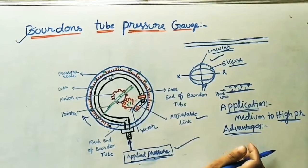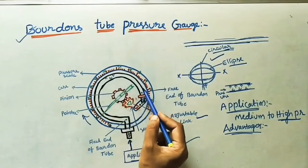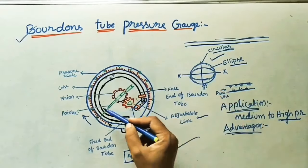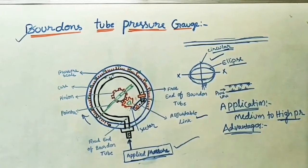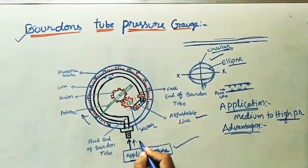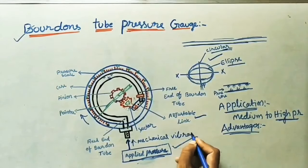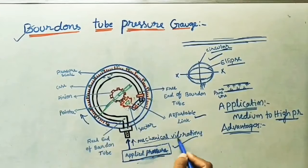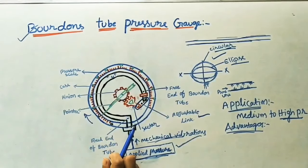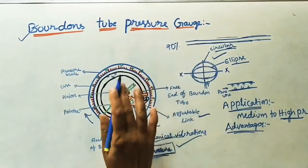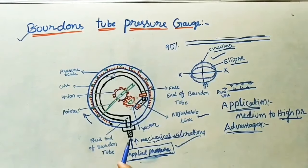Limitations: we have to wait for some time for the tube to get into its circular shape when gas enters — so there is a slow response. Also, the gauge is very sensitive to mechanical vibrations from machines or other sources; it may consider those vibrations as pressure, which is the main limitation. Despite these disadvantages, in 90 percent of industries this Bourdon tube is used because of its simple arrangement and low cost.